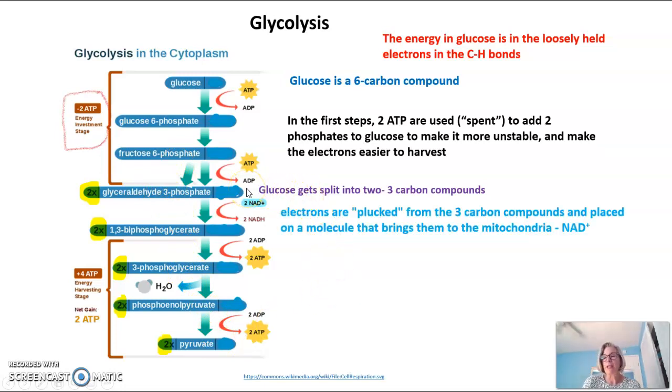So after a glucose gets split into its two three-carbon compounds, the process of plucking those electrons begins. And the electrons are taken from the three-carbon compounds and placed on a molecule called NAD+, and that molecule, when it picks up electrons, is called NADH. And that molecule, NADH, is going to bring these electrons to the mitochondria. So I want to stop talking about glycolysis for a minute, and go through the process of how does NADH hold electrons, and where does it take them?